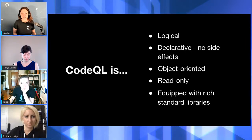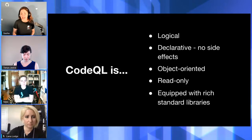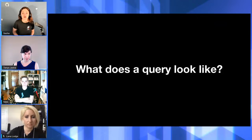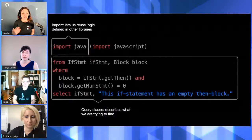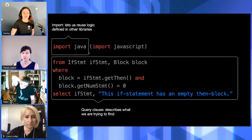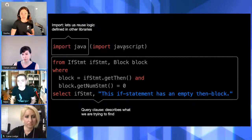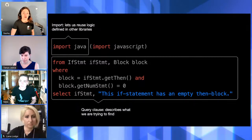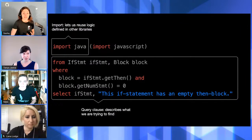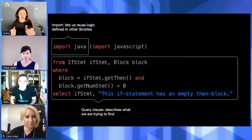Your database is also read-only. The database in this case is imported code — once you import the code, it's read-only. If you want to run the check again, you modify your code and import it as a database again. In terms of code scanning it abstracts that away from you. It comes equipped with a rich set of standard libraries, which is how it gets really powerful. A basic CodeQL query: you first import a standard library for the language — in this case JavaScript — and then you declare your variables.